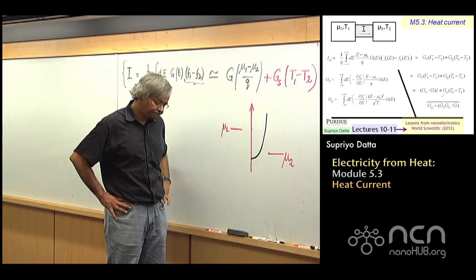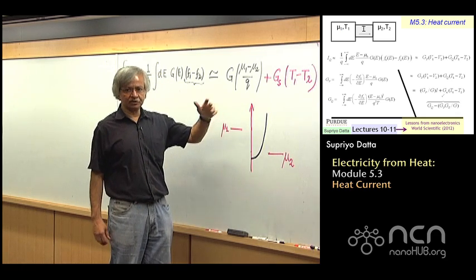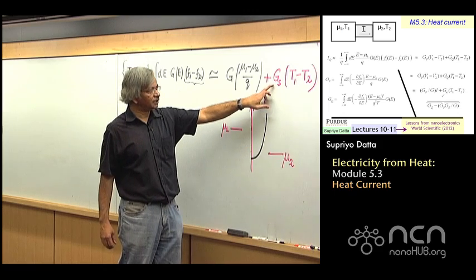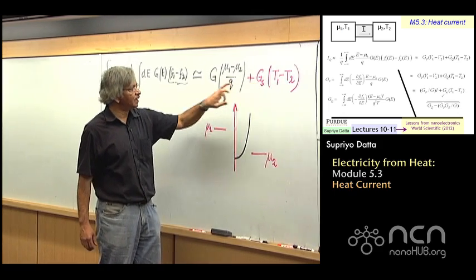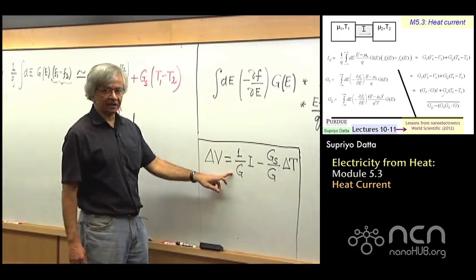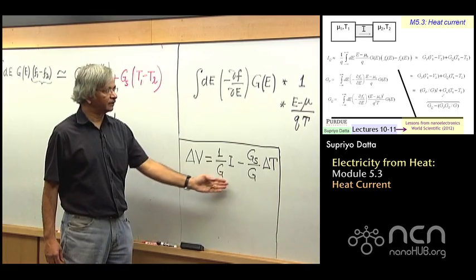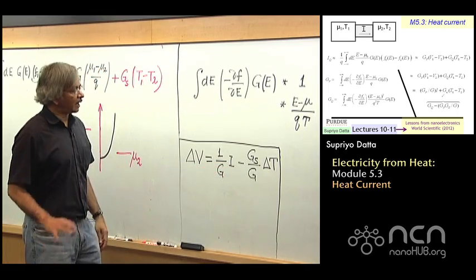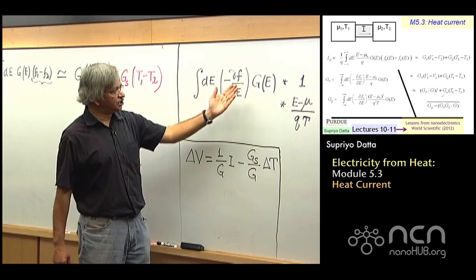And as we explained, what is experimentally measured usually and what is generally quoted all over the literature is the Seebeck coefficient, which is actually the ratio of gs to g. And that's what we kind of summarized here. That is, this expression with a little rearrangement can be written in this form.